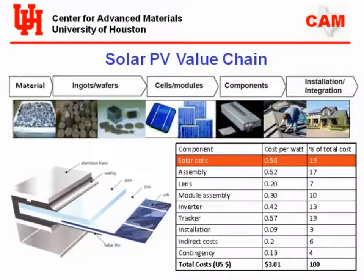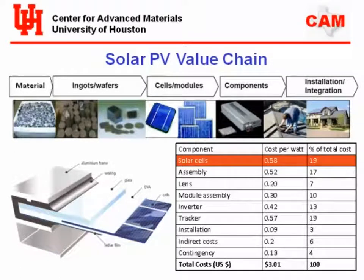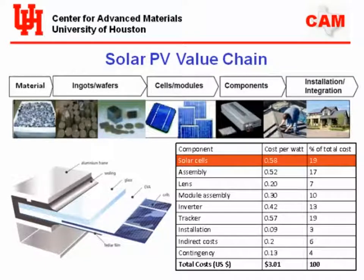What makes up the value chain? You've got the module — starting with the basic material, the components, the inverter, and the installation. The silicon cell itself is about 60 cents per watt, but by the time you add everything else up, it's about five times that cost. Increasing efficiency will bring down the cost; increasing the time of use will bring down the cost.